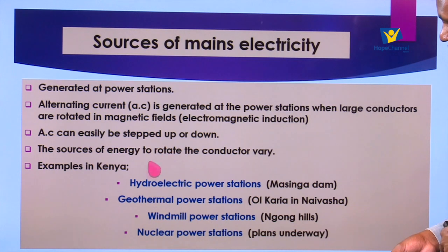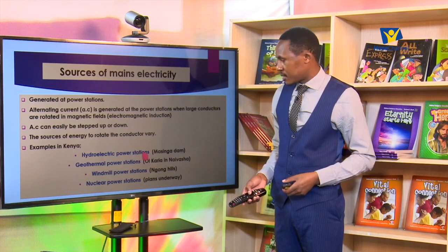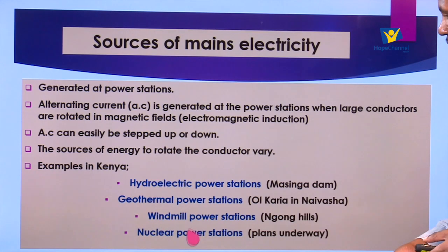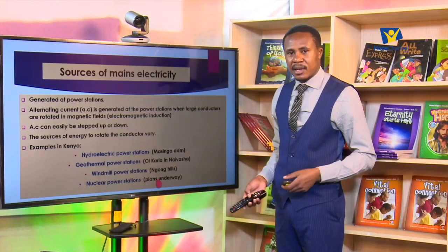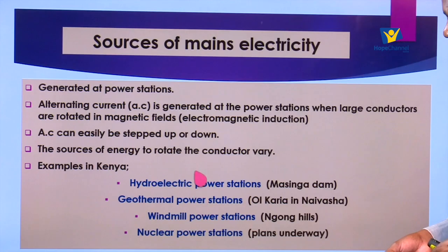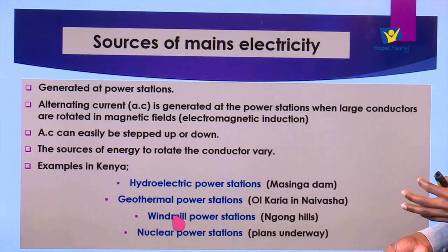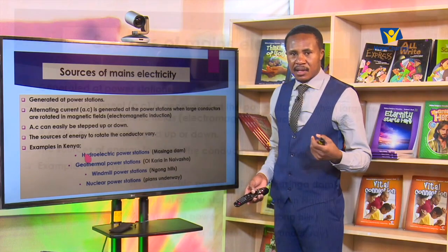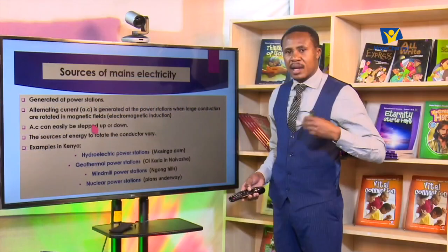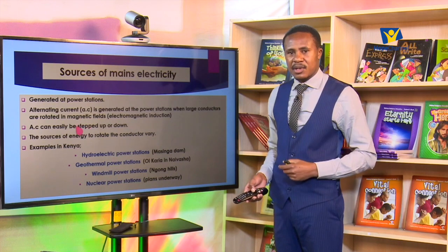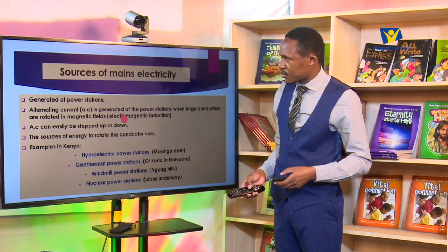Another source is geothermal power stations; in Kenya the example is the Olkaria generating plant, found in Naivasha. We also have windmill power stations — in Kenya the example is found in Ngong Hills in Kajiado County. We also have nuclear power stations; at the moment we do not have one in Kenya but plans are underway. By the end of the day, whether we are using hydroelectric, geothermal, windmill, or nuclear power stations, we will have large conductors rotating inside magnetic fields, producing an induced EMF, so whatever is fed into the transmission system will be an AC.